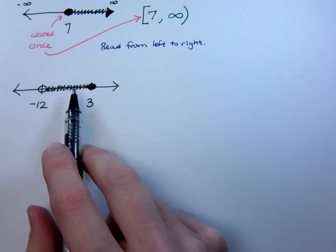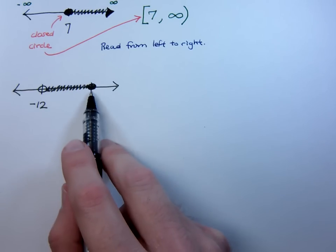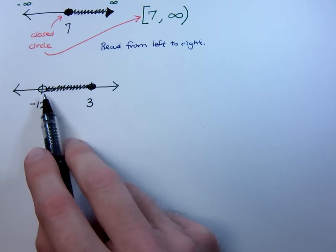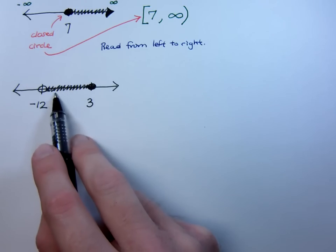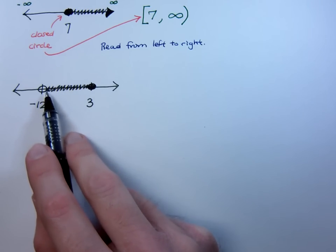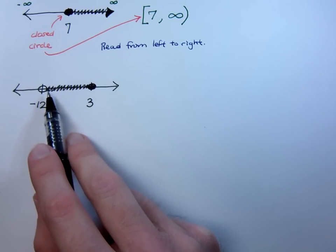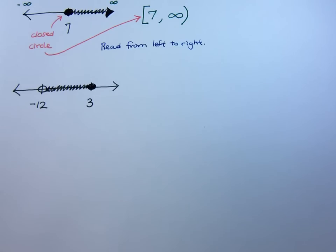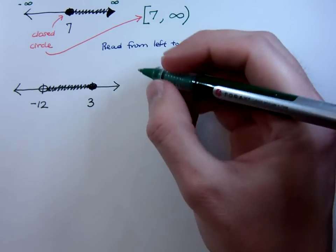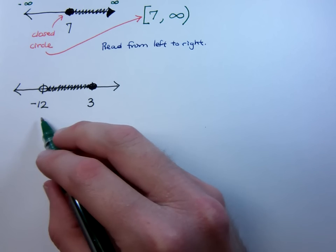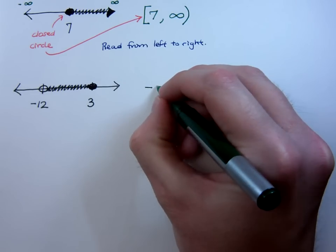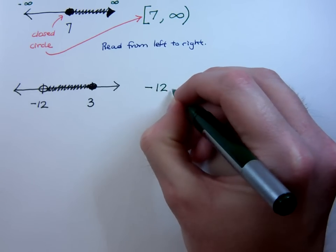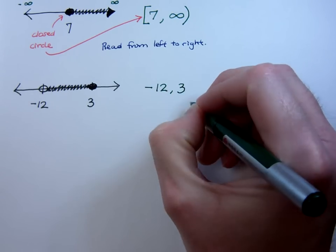Now what this means to us is that all of our solutions are occurring between negative 12 and 3. Not only are they occurring between negative 12 and 3, we're including 3 with a closed circle, but we're not including negative 12. That means from the right, you can get as close as you want to negative 12, but you don't ever get to include negative 12 in the solution set.